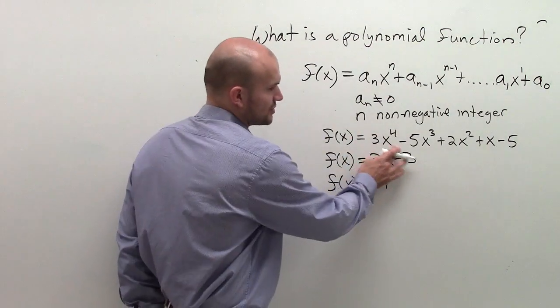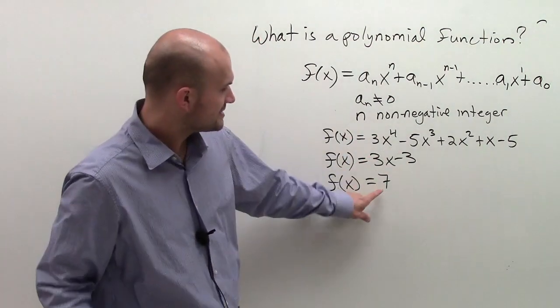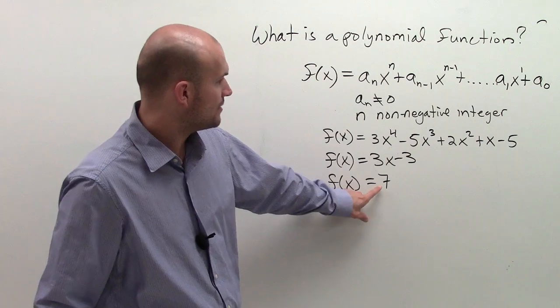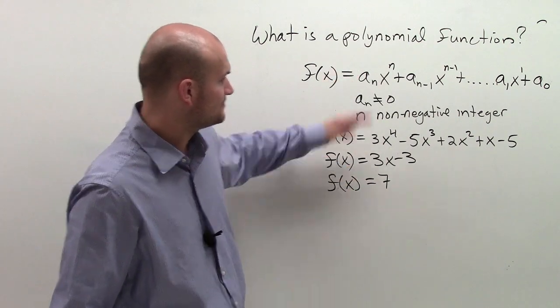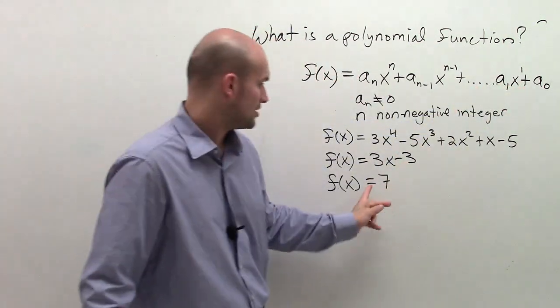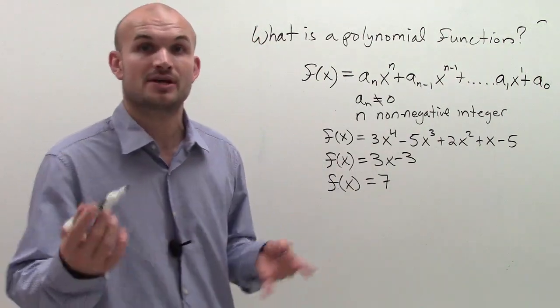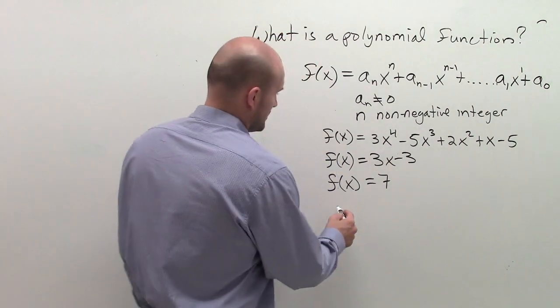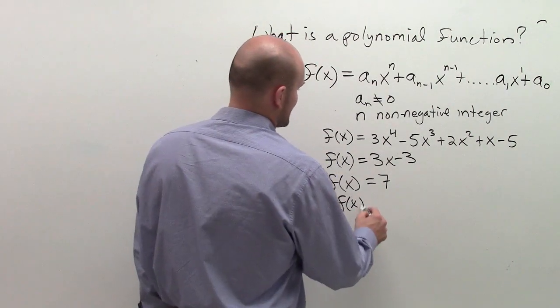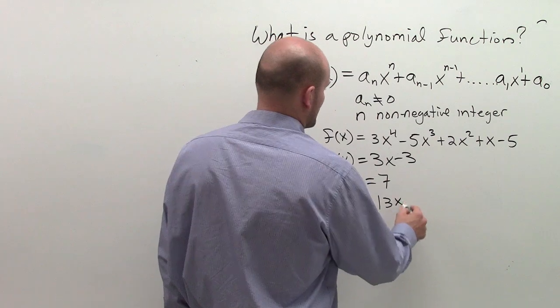In this case, we usually just don't write that, though. In this case, we can write this and say, all right, well, I have an a_n, which is going to be my a_0, which is going to equal 7. So now let's look at some counterexamples, some examples that are not polynomial functions. So we could say f(x) equals absolute value of 3x.